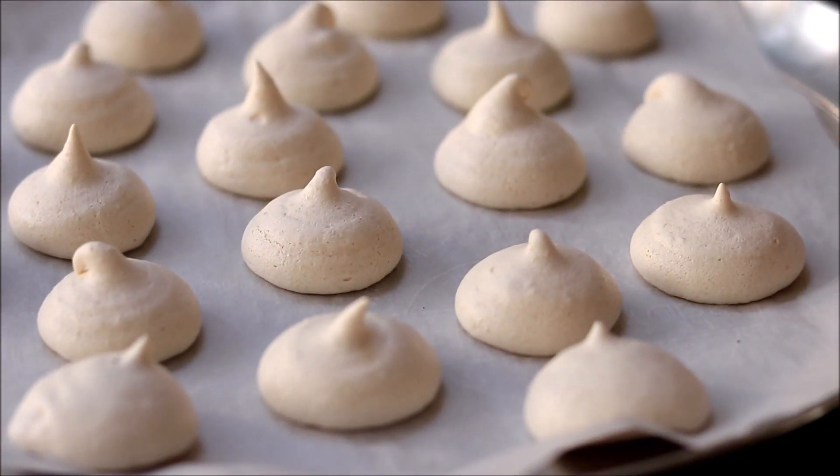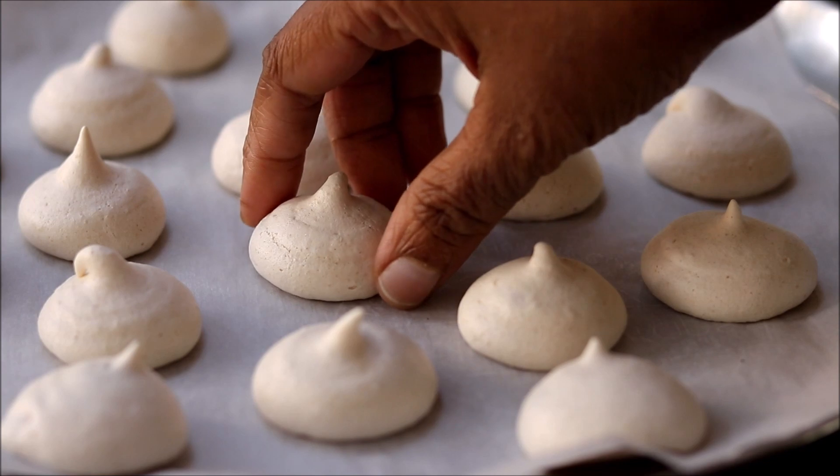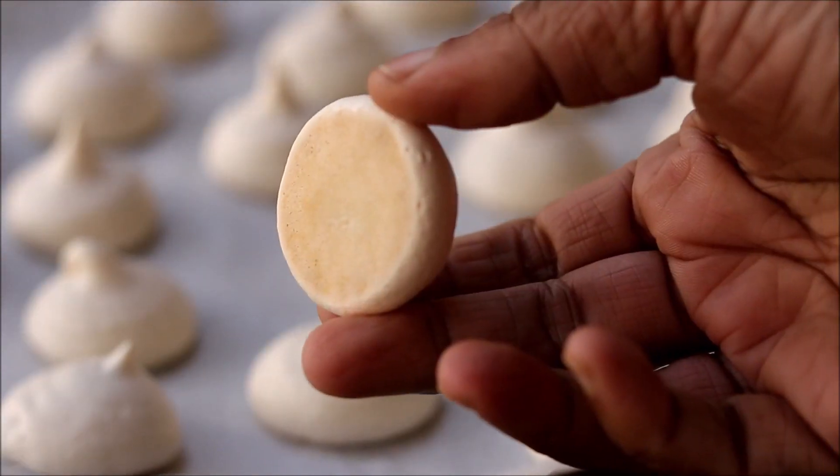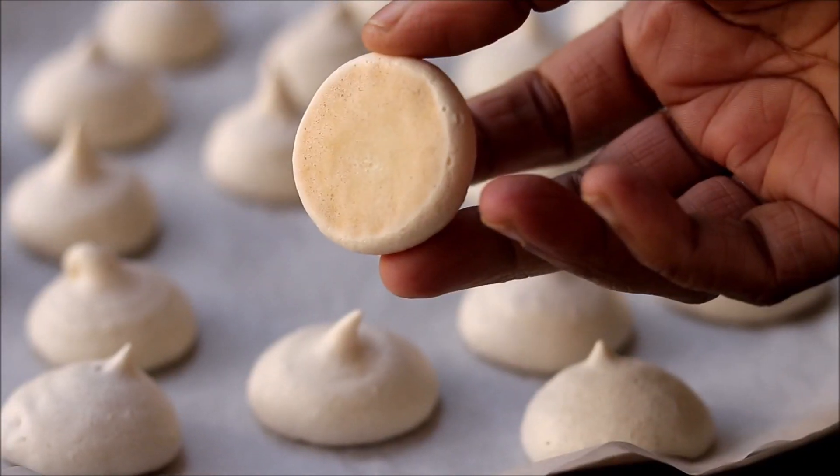Bake this in a 100 degree preheated oven for 1 hour 30 minutes. Once it is baked, keep them in the oven itself for half an hour, and then open the oven and take it out.